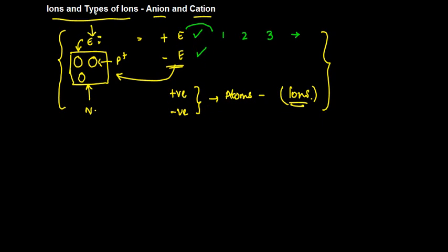So these ions are basically divided into two parts. One is a cation, the other one is an anion.